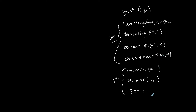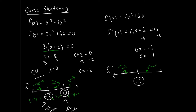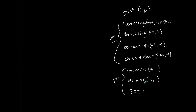Points of inflection come from the second derivative and are points where there's a change in concavity. The function goes from concave down to concave up at x = −1, which means this is a point of inflection. So I have the x-coordinate of the point of inflection: x = −1.